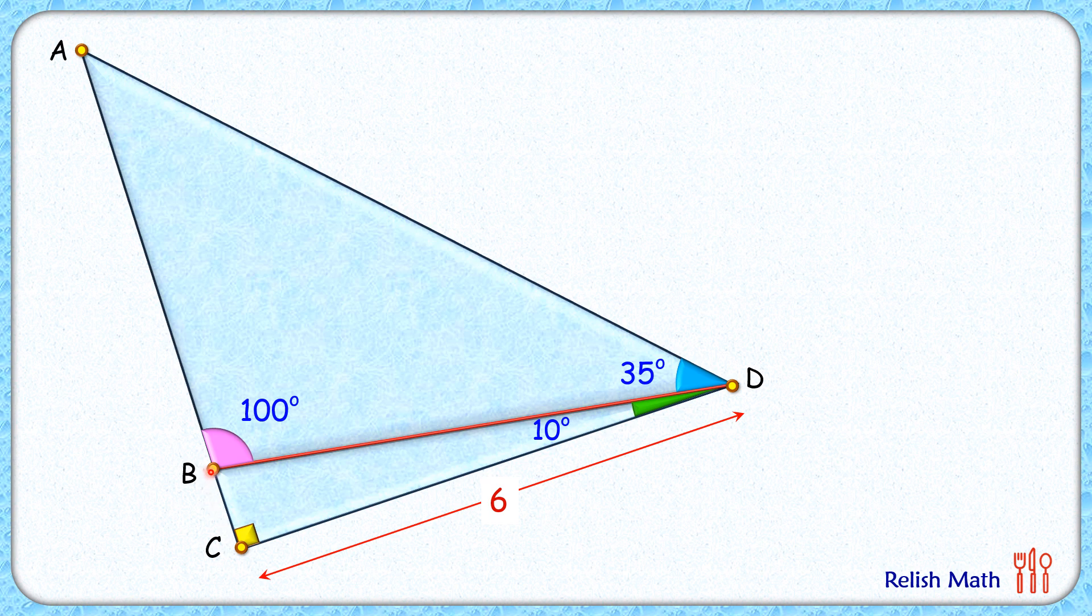Now if we look at this bottom triangle BCD, here angles are 90 degrees and 10 degrees. Thus by angle sum property, this remaining angle will be 80 degrees. As the angle sum around this point B is 100 plus 80 or 180 degrees, thus this line ABC is a straight line.